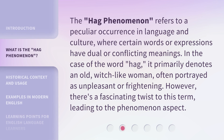The hag phenomenon refers to a peculiar occurrence in language and culture where certain words or expressions have dual or conflicting meanings. In the case of the word hag, it primarily denotes an old witch-like woman, often portrayed as unpleasant or frightening. However, there's a fascinating twist to this term, leading to the phenomenon aspect.